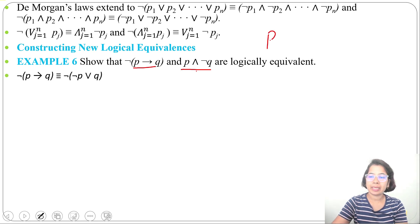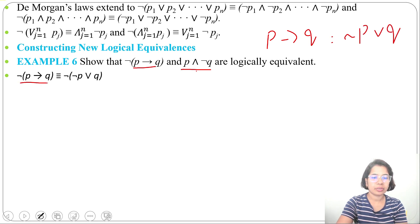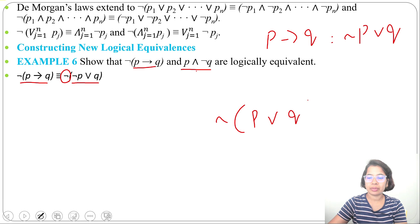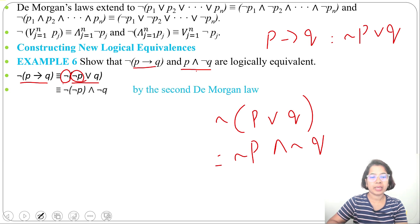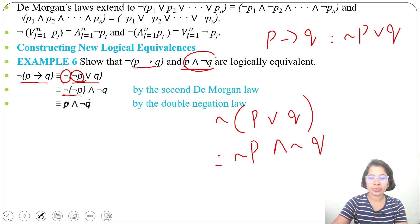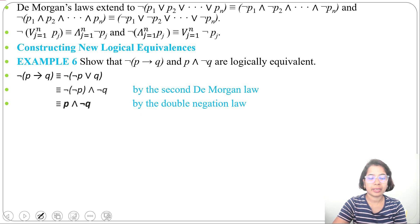We know that (p implies q) can be written as (negation p or q). So in place of (p implies q), we write (negation p or q), with one negation already given outside. Now applying De Morgan's law: negation of (negation p or q) is equivalent to (negation of negation p) and (negation q). By the double negation law, negation of negation p becomes p. So we get (p and negation q), proving that negation of (p implies q) is logically equivalent to (p and negation q).